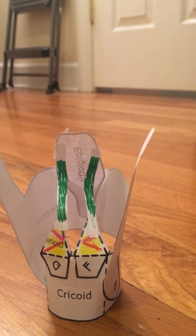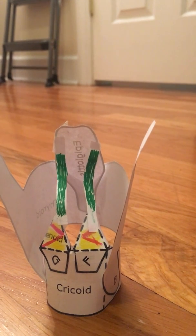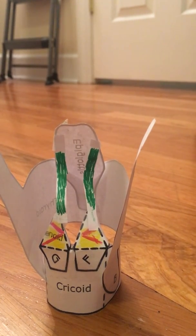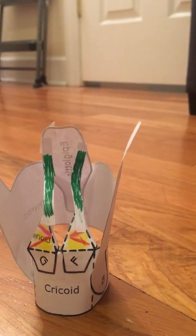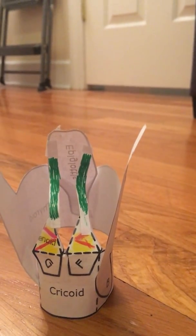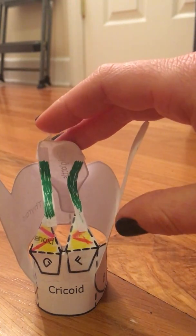You see them outlined in green. They course from the arytenoids and insert into the lateral sides of the epiglottis. When they contract, they pull the epiglottis down over the laryngeal cavity and protect it from potential food particles or other invading substances.